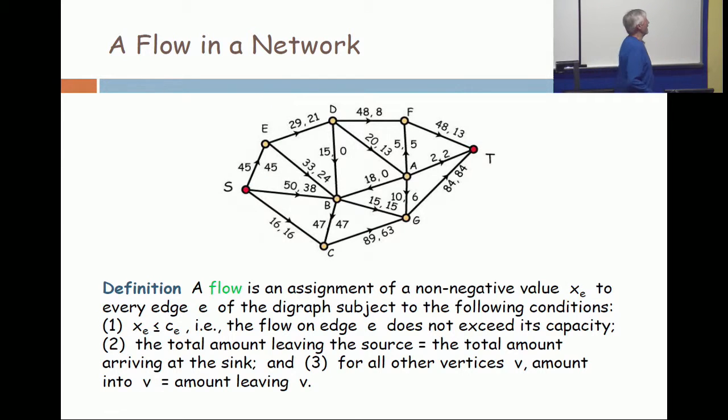Now look at any intermediate vertex. Look at vertex B. The requirement is the amount coming into B has got to exactly equal the amount going out from B. So how much comes in to B? I see edges. There's 0 on one. 24 and 38 come in.